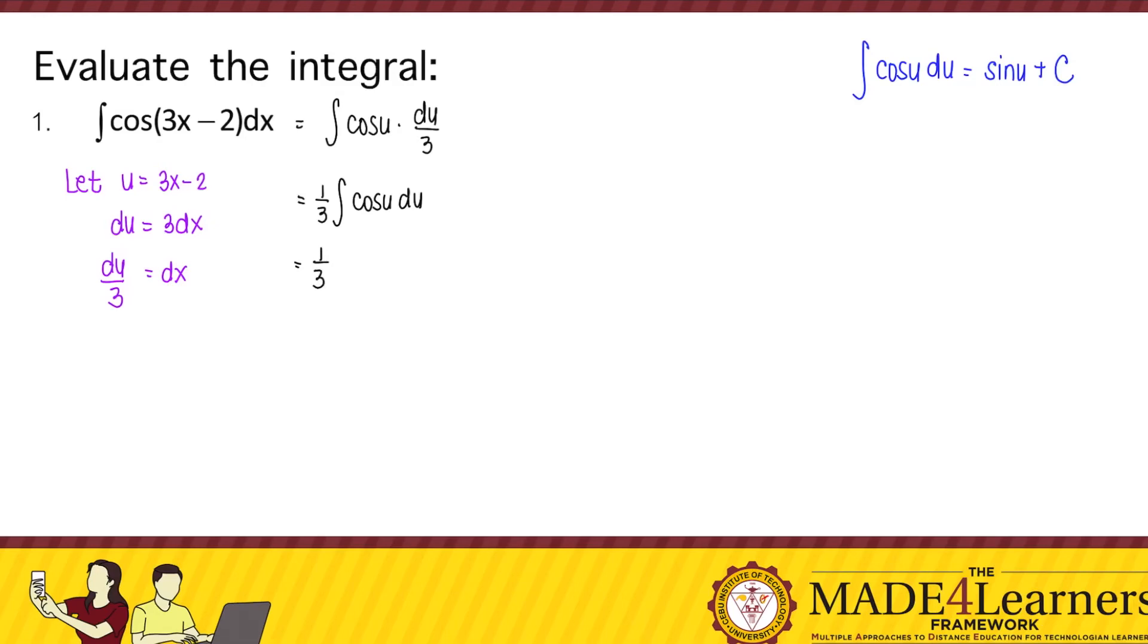And using the integration formula, that's one-third sine of u plus c. And then u is equal to 3x minus 2 plus c.